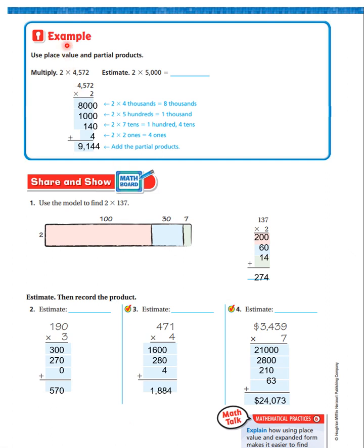Here's an example. It says, use place value and partial products. Multiply 2 times 4,572. We'll estimate. 2 times 5,000 is what? 2 times 5,000 is 10,000.